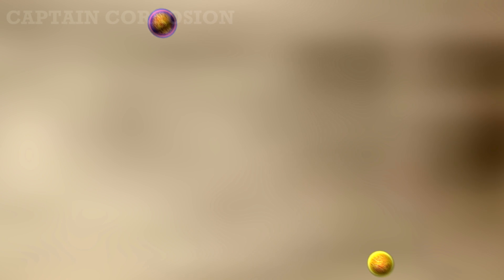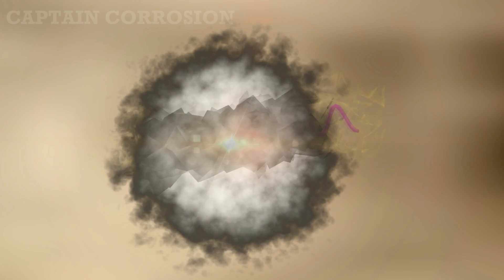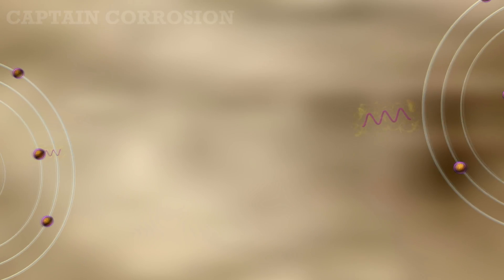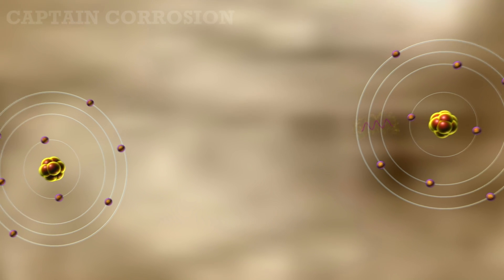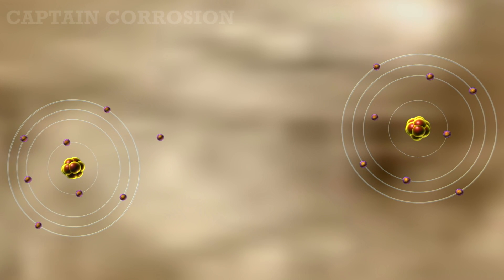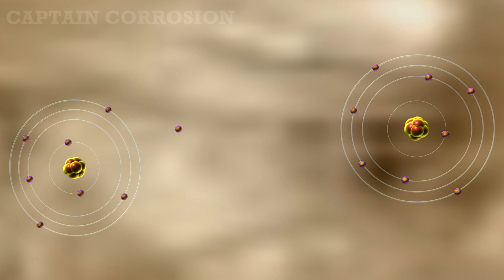Anyhow, the positron will sooner or later combine with an electron, and matter is converted into energy once more. But in this case, two gamma photons of at least 0.51 MeV are created, and those are capable of causing even more ionization of the surrounding matter.